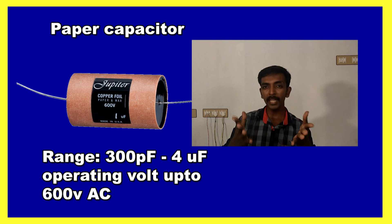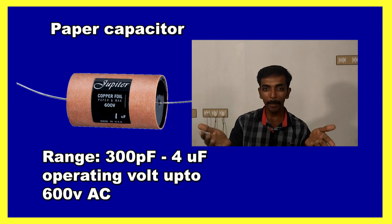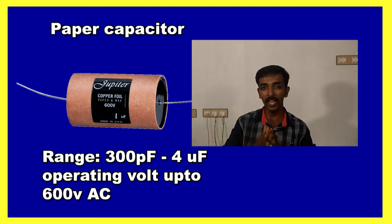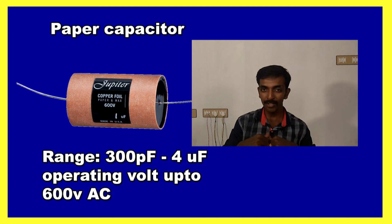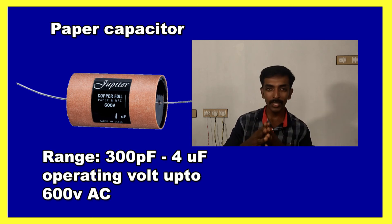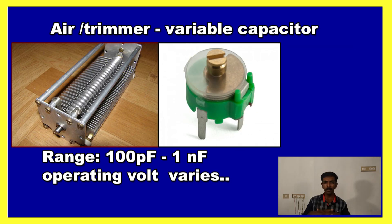The paper capacitor is used purely for AC voltages. I have seen paper capacitors in older transistor radios — not the latest digital ones, but the older transistor models. See the image. These capacitors operate at around 600 volts AC.